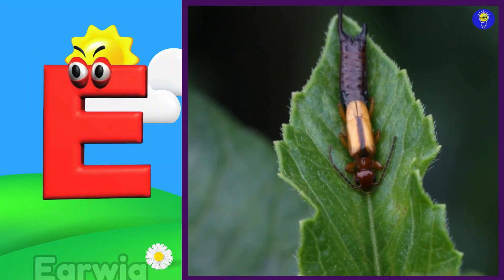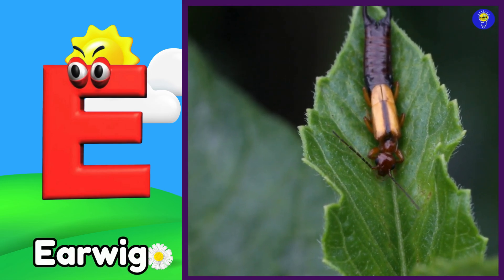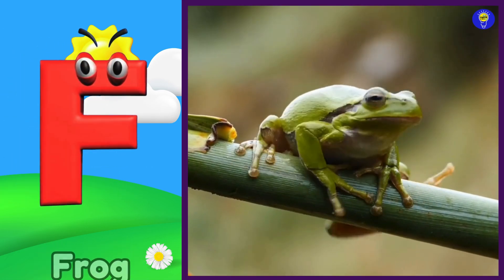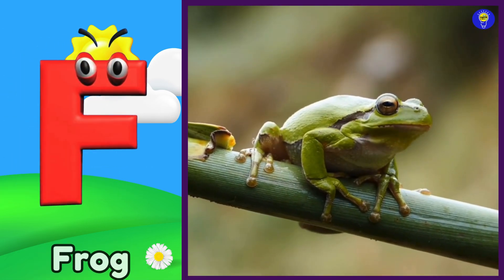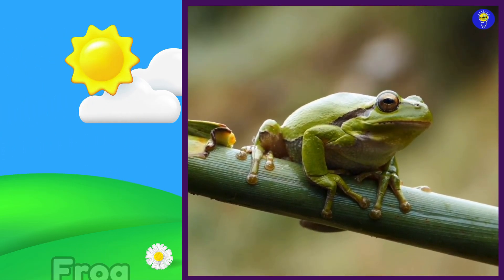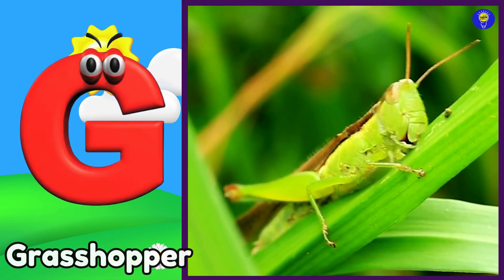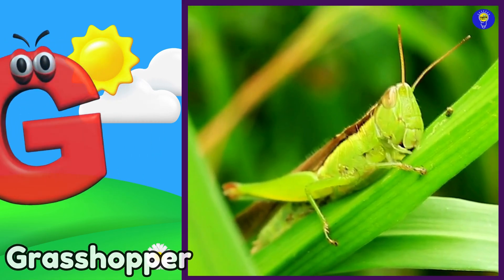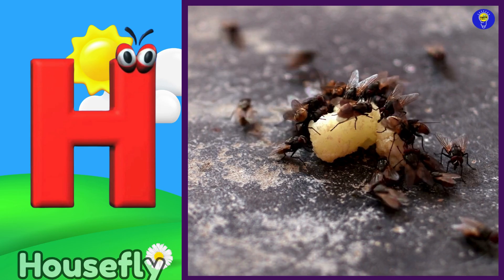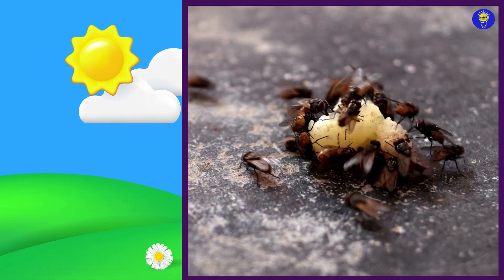E is for earwig. E, e, earwig. F is for frog. F, f, frog. G is for grasshopper. G, g, grasshopper. H is for housefly. H, h, housefly.